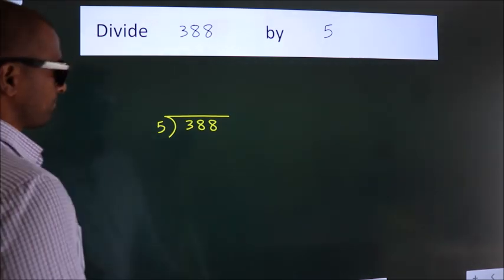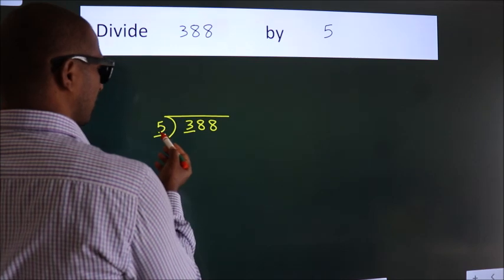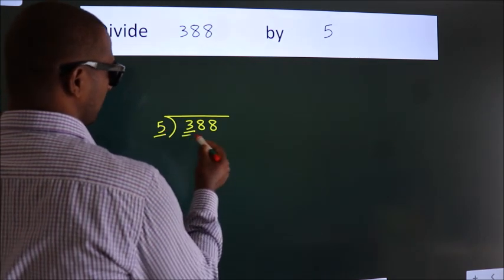Next, here we have 3, here 5. 3 is smaller than 5, so we should take 2 numbers, 38.